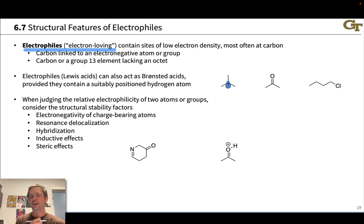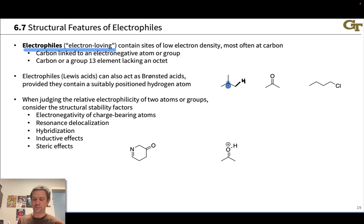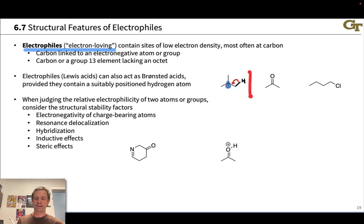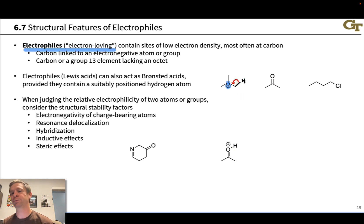One thing to note is that Lewis acids can also often act as Bronsted acids. Carbocations often have hydrogens linked to the carbon adjacent to the positive charge, and these can be lost to form a neutral species—here an alkene and H⁺—showing how this electrophile can also act as a Bronsted acid via this appropriately positioned hydrogen.